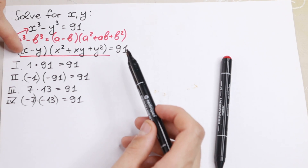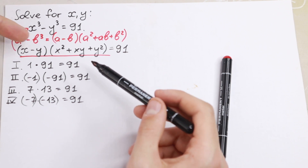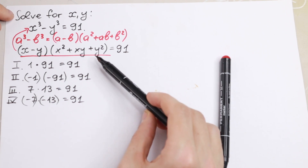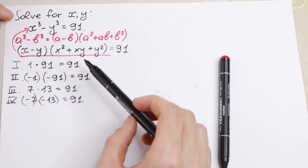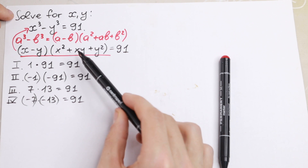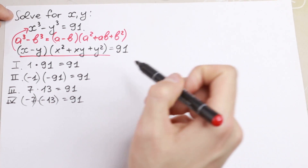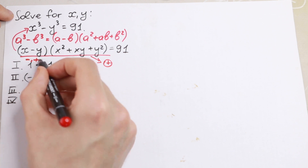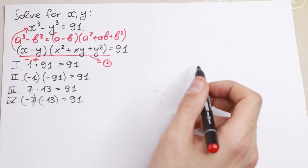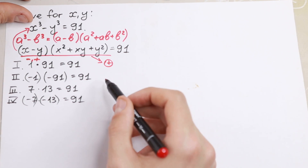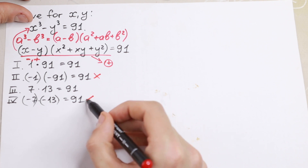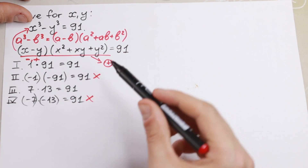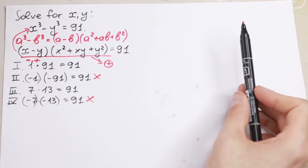We don't know the sign of the first parenthesis (x minus y) — it can be positive or negative. But the second parenthesis, x² plus xy plus y², is always positive, because it is the sum of two squares plus a product. So we reject the cases with minus 1 times minus 91 and minus 7 times minus 13, since those would require the always-positive factor to be negative. We are left with only two valid cases.